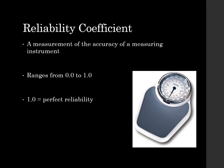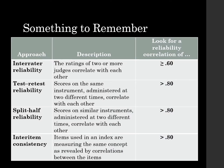Next, let's look at a reliability coefficient, which is a measurement of the accuracy of a measuring instrument. It can range from zero to one, where one is perfect reliability. For inter-rater reliability — when ratings of two or more judges correlate with each other — we want a reliability correlation coefficient of 0.6 or better.